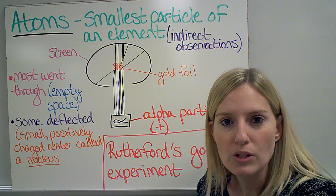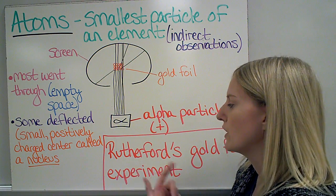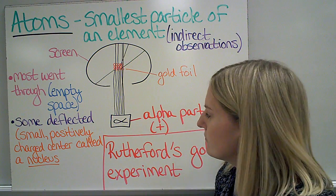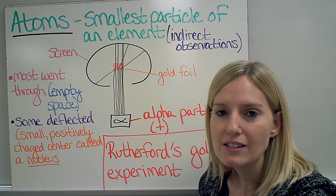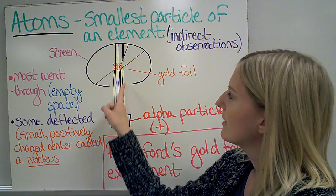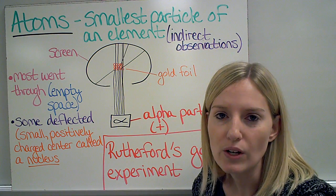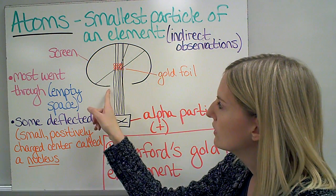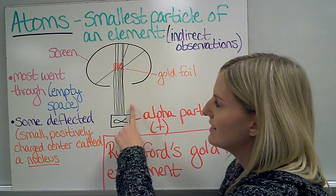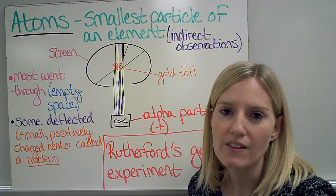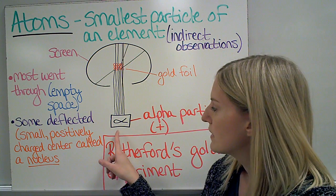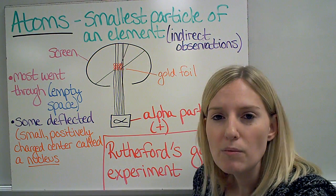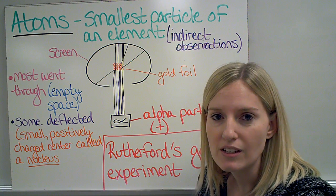One particular indirect observation was performed by a scientist by the name of Rutherford, and he did an experiment called the gold foil experiment. He took alpha particles, which are positively charged particles, and he shot them at a very thin piece of gold foil, which would be made of gold atoms. He had a screen that went all the way around the foil, and wherever the particles ended up, they would basically light up the screen there. We knew where they started, but we also were able to see where they ended on the screen. Two particular things were of interest when we see the results of this.